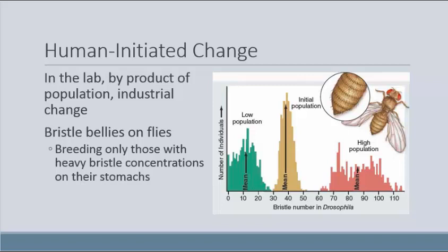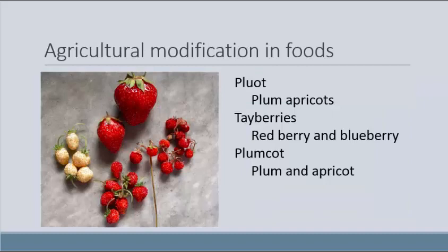Agricultural modifications to food are another excellent example of selection in action. The tiny berries in the picture aren't raspberries — those are what natural strawberries look like. By selectively breeding for larger berries we end up with the huge strawberries seen today. Nowadays they also breed different plants together, producing new foods: pluots — a plum bred with an apricot — are actually quite good. There are also tayberries and plumcots, all examples of mixing species and changing traits, which can happen naturally as well.